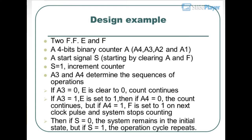Design Example: 2 flip-flops E and F, and a 4-bit binary counter A (bits A4, A3, A2, A1) with a start signal S. The system starts by clearing A and F. When S=1, the counter increments. A3 and A4 determine the sequence: if A3=0, E is cleared to 0 and counting continues; if A3=1, E is set to 1. Then if A4=0, counting continues; if A4=1, F is set to 1 on the next clock pulse and the system stops. If S=0, the system remains in the initial state; if S=1, the operation cycle repeats. The ASM chart describes this behavior.